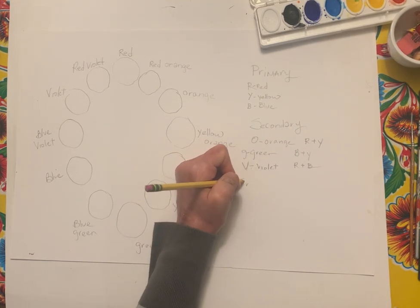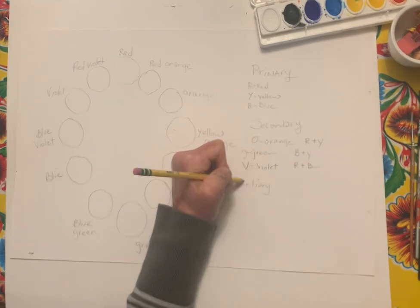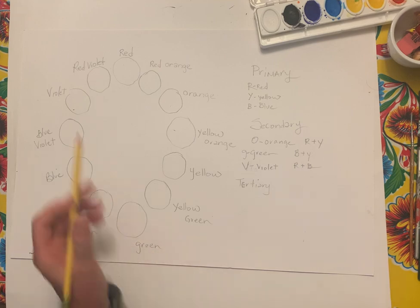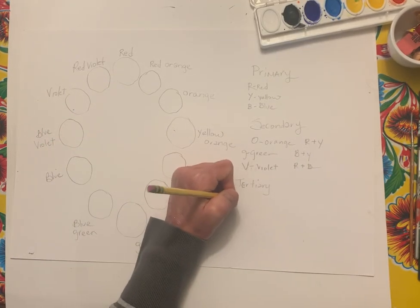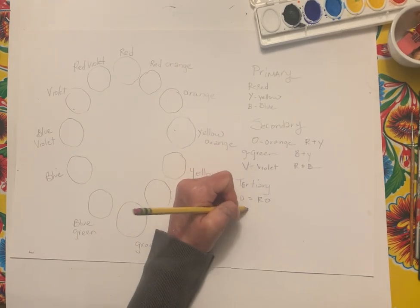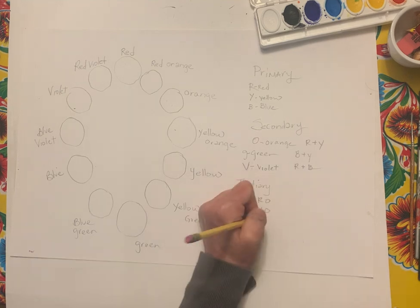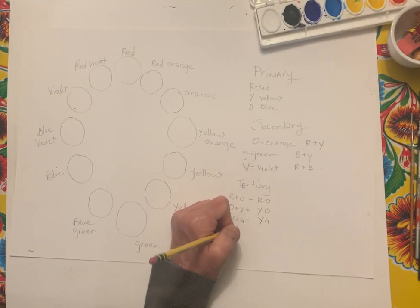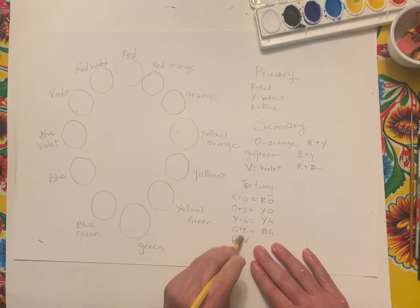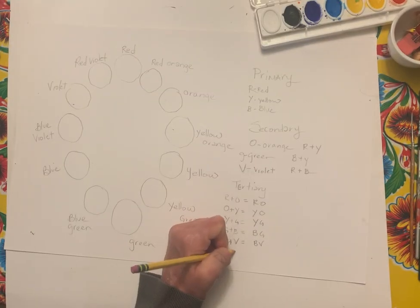And then we have our tertiary colors — I always spell this wrong, I think it might be 'tertiary.' The next six are: red plus orange equals red-orange, orange plus yellow equals yellow-orange, yellow plus green equals yellow-green, green plus blue equals blue-green, blue plus violet equals blue-violet, and violet plus red equals red-violet.